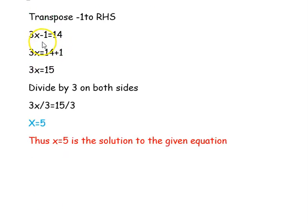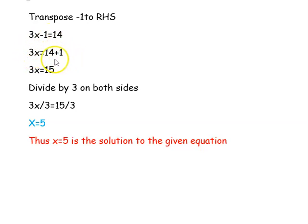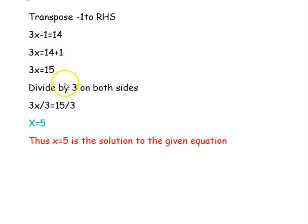2x plus x becomes 3x, so 3x minus 1 equal to 14. In the next step, we are transposing minus 1 from the left hand side to the right hand side. It will become plus 1. So our equation is 3x equal to 14 plus 1, giving 3x equal to 15.